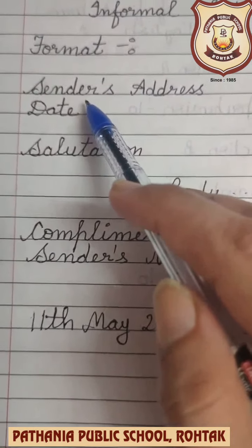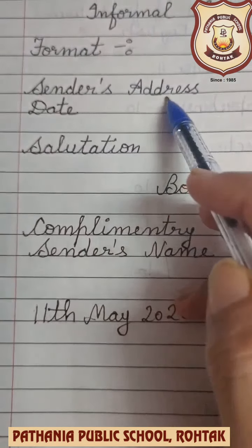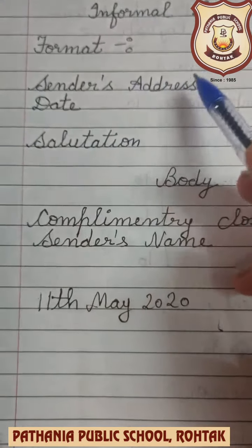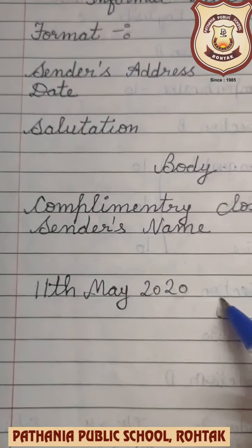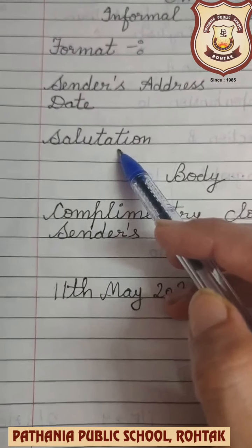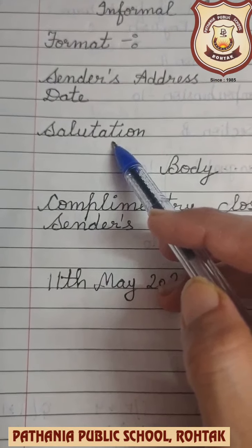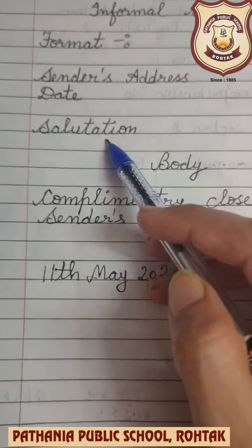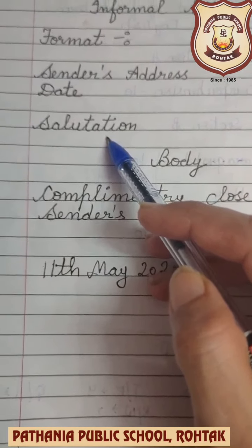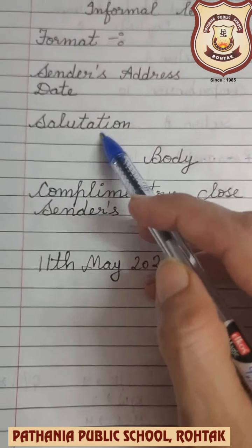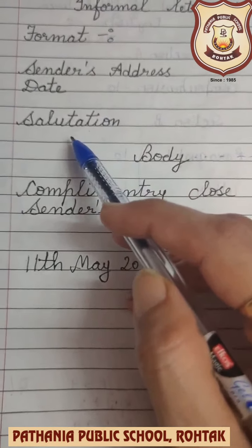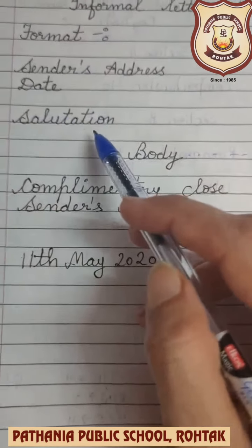Firstly, we will write down the sender's address — who is sending the letter. Then the date — on which date you are writing the letter. Then salutation. Salutation means to wish someone. For example: dear uncle, dear Rina. We can use any name of the person to whom we are writing the letter — we are saluting them.